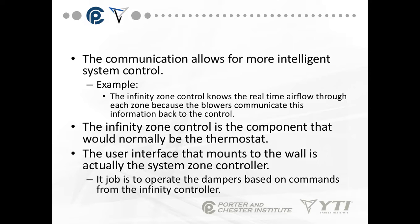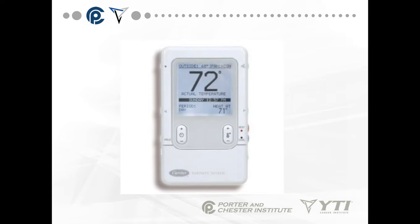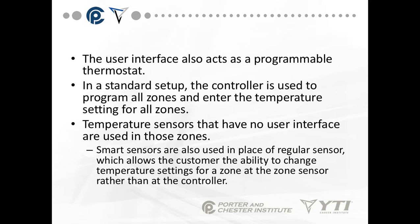For example, the Infinity control knows real-time airflow through each zone because the blower communicates this information back to the control. The Infinity Zone control is the component that would normally be the thermostat — the user interface that mounts to the wall. Its job is to operate the dampers based on commands from the Infinity controller. The user interface also acts as a programmable thermostat, used to program all zones and enter temperature settings. Smart sensors allow the customer the ability to change the temperature setting for a zone at the zone sensor rather than just at the controller.